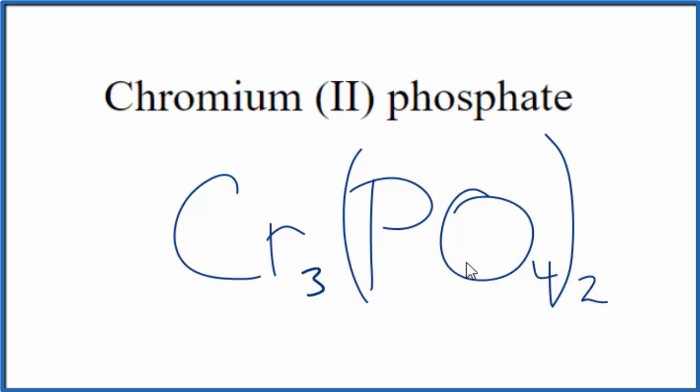So, this is the formula for chromium-2-phosphate, Cr3(PO4)2.